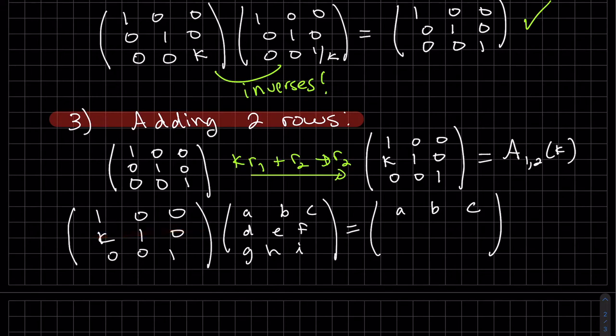Row two is K, it's this row, times that is KA plus D. This times this is KB plus E. And coming back to our bottom one, GHI. What about the inverse?